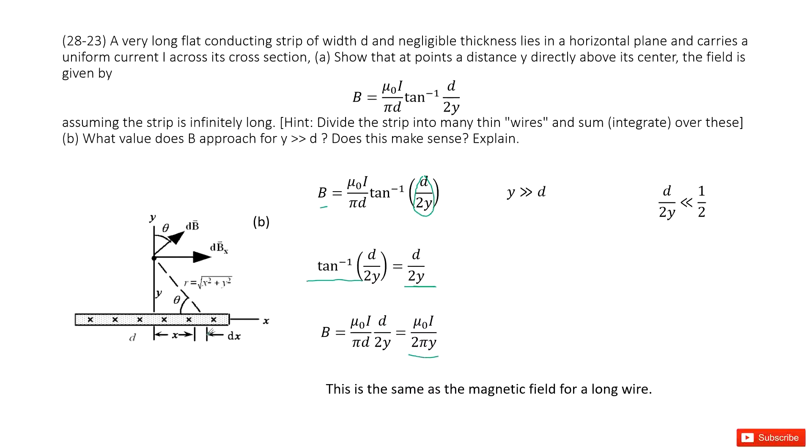Wow! What's that? That is the, in this case, because y is much larger than d, we can consider this is a wire. This is a wire flows in, and then this is the magnetic field due to a straight wire, just equal to this one, μ₀i/(2πy).